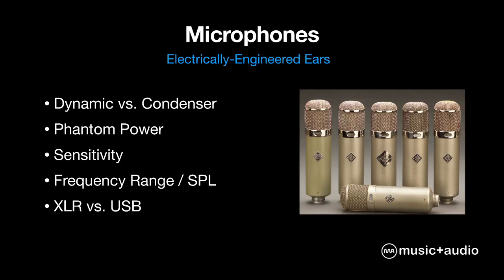A condenser might be more useful in a studio situation, but you can use either for either application. Pretty much every microphone is designed at least partially with vocals in mind, so it's not hard to find a vocal mic, but there are a lot of parameters to consider. Worth mentioning also is the difference between XLR and USB microphones. XLRs are analog — just the microphone itself plugged into a preamp that gives it signal boost and shaping. A USB microphone is a more all-in-one package: microphone plus preamp plus interface that sends signal into your computer via USB. You don't always need a compressor or EQ in your signal path, but sometimes it can be useful.